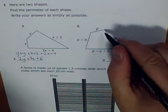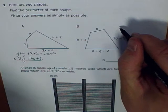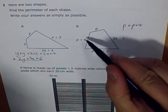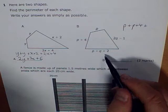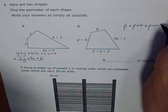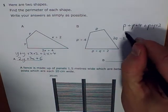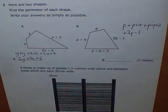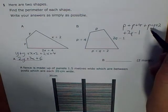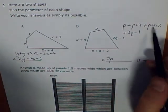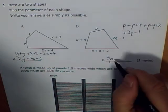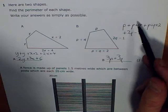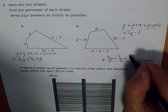Same thing here. Just around this shape, I've got p plus p plus 4, plus p plus q plus 2, plus 2q minus 1. Now I'm going to collect like terms. I've got 1p, 2ps, that's 3ps. That gives me 3p. And q's, I've got 2q and another q, so I've got plus 3q. Then I've got plus 4 plus 2 gives me 6 minus 1, which equals 5.